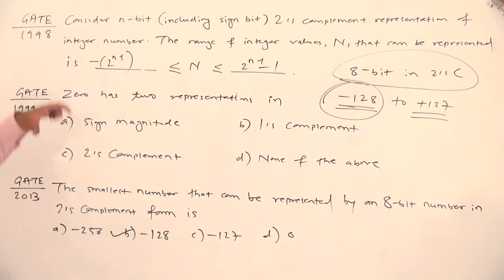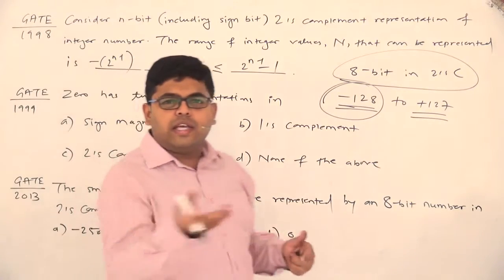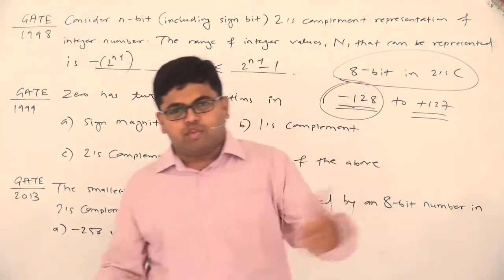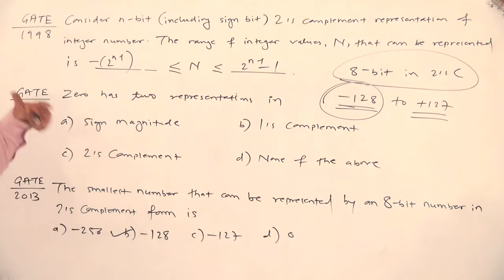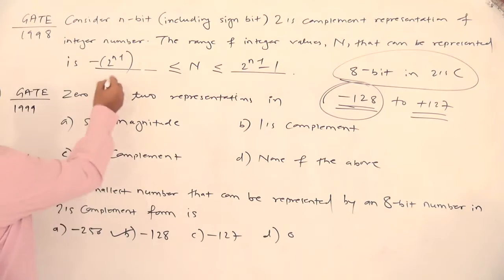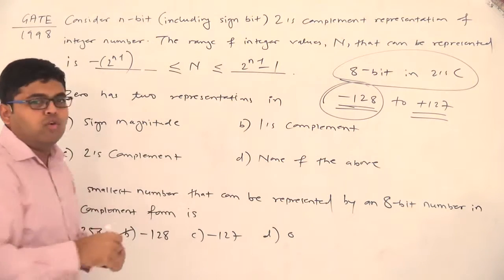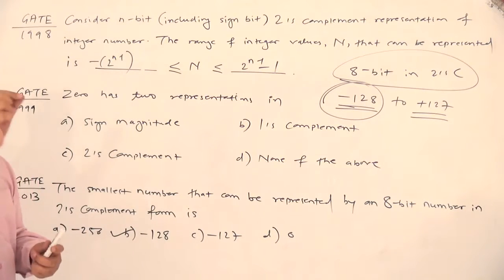Now see, in GATE 1998, in earlier years, say in 98 and before that or I think up to 2003, GATE was a theoretical paper. So there were subjective questions like the range was given and blanks were there. Now you needed to write the range in the paper.